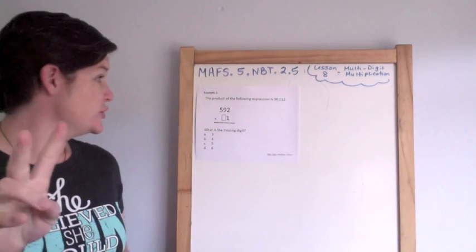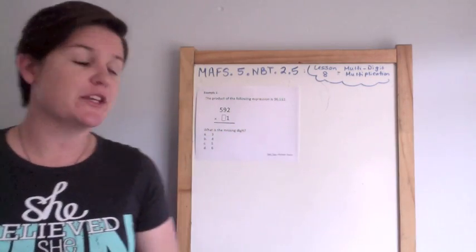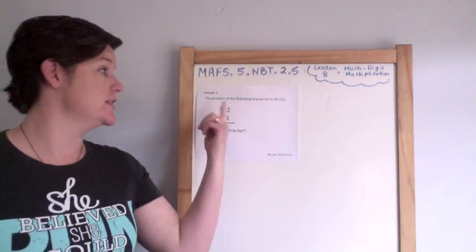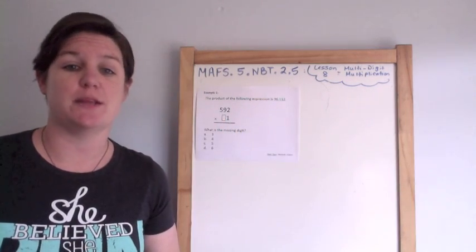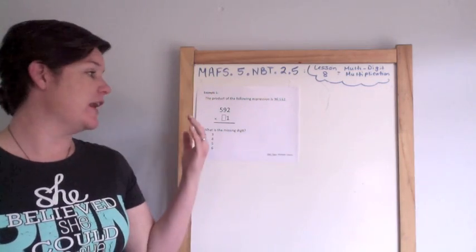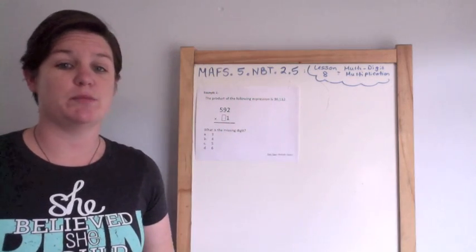Hey everybody, we are on example number two. The product of the following expression is 36,112. The product is the answer to a multiplication statement. What is the missing digit? Well, I've got 592 times something here with 1 in the ones place.